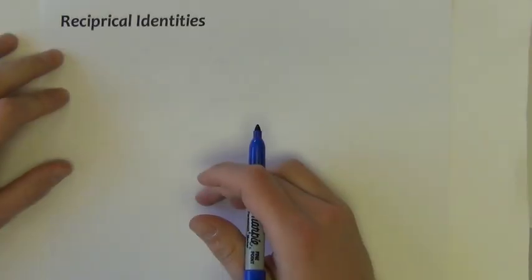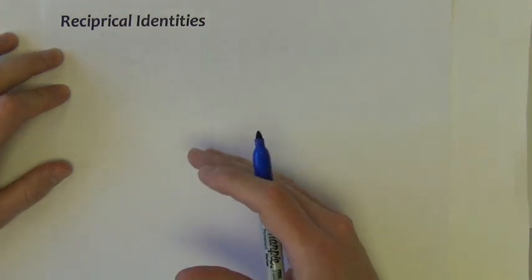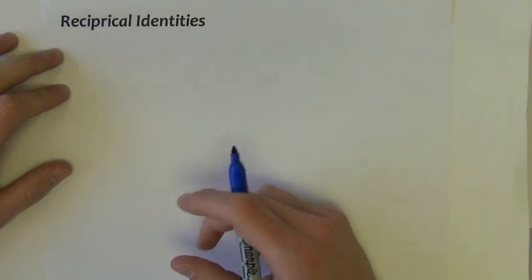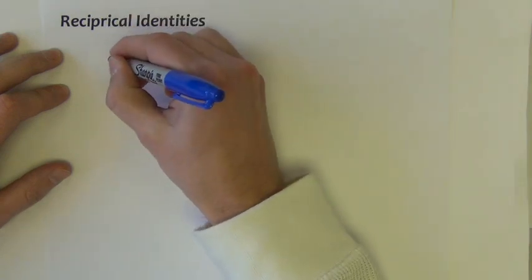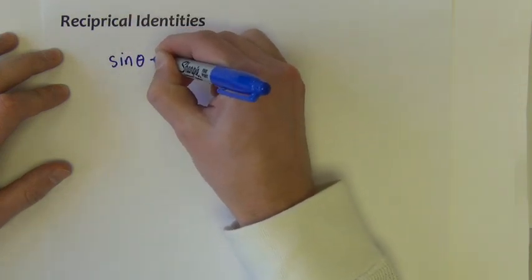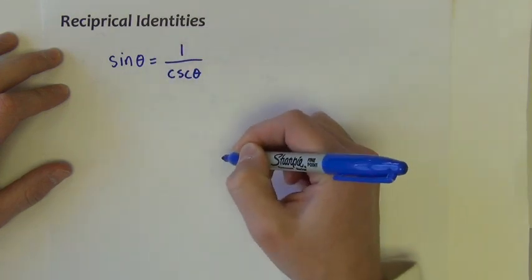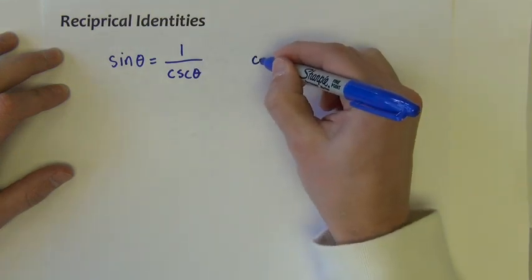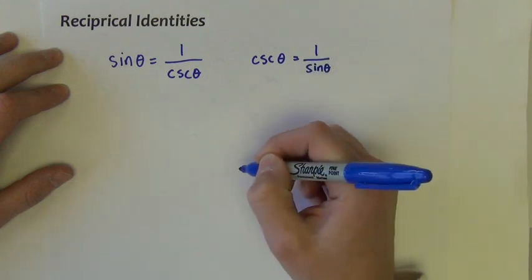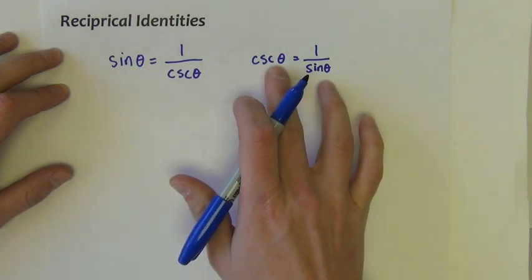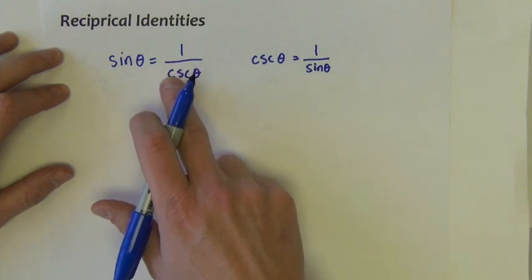The first set of fundamental identities are called the reciprocal identities. These identities should follow pretty naturally from what we know already just from our SOHCAHTOA definitions and our solving of right triangles. There are six of them. The first one: sine of theta equals 1 over the cosecant of theta. And its counterpart is cosecant of theta equals 1 over sine theta. It makes sense that we are pairing sine and cosecant because we know them to be reciprocals. Sine is opposite over hypotenuse; cosecant is hypotenuse over opposite.